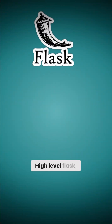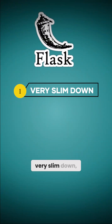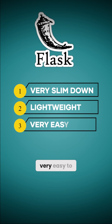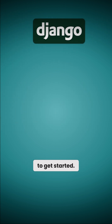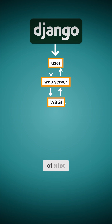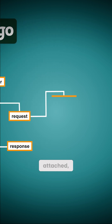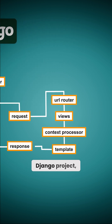Flask is very slim, lightweight, and very easy to get started — literally very easy to get started. Django is more of a lot of bells and whistles attached, so when you start a Django project you're going to have more built in for you.